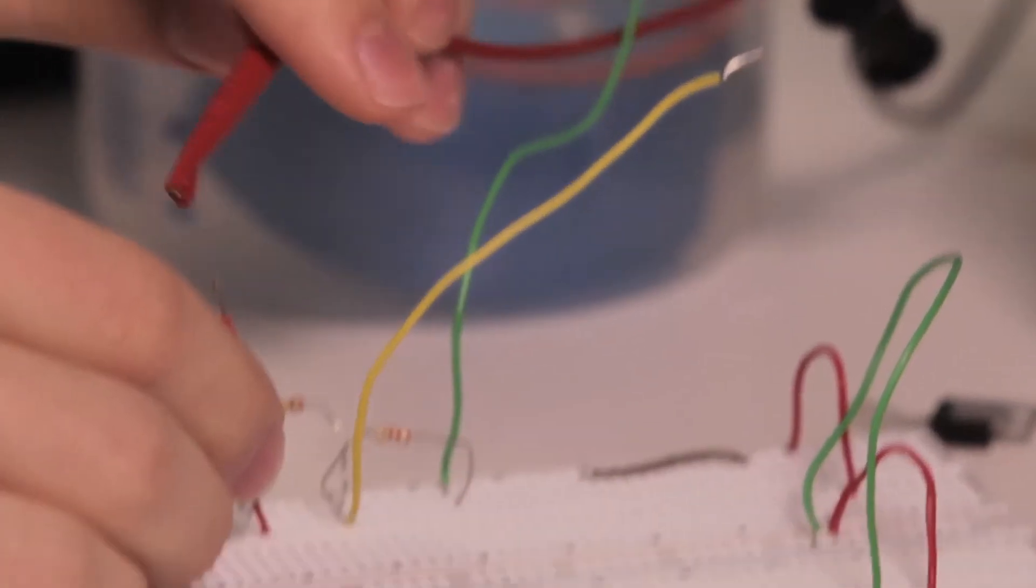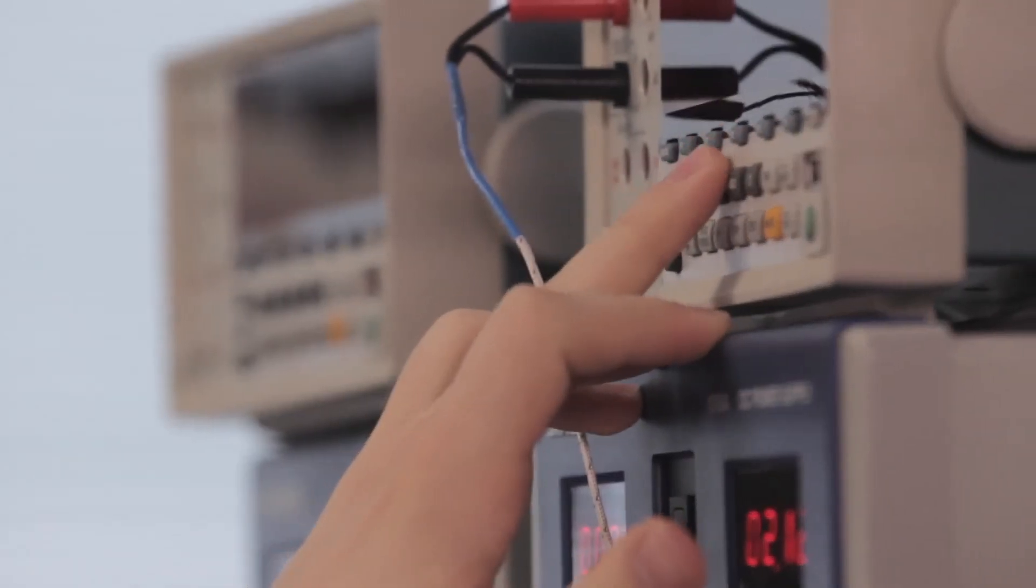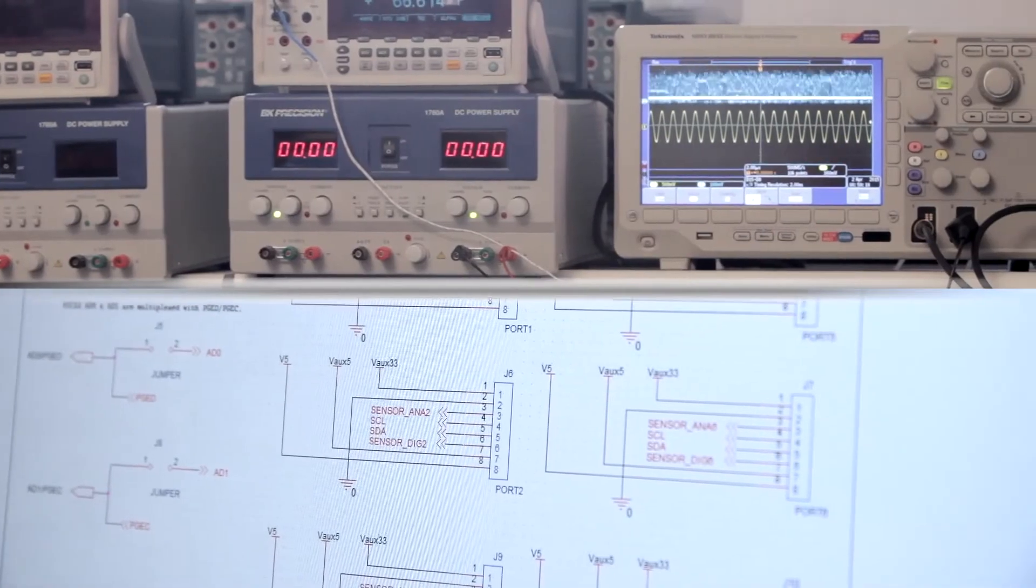The first project that we ever deal with in our actual lab, we start off with a board where essentially we have a circuit that has maybe three or four problems that we have to identify and then fix ourselves. It allows us to understand the process that a lot of these companies have to go through from starting from an idea to going towards end product.